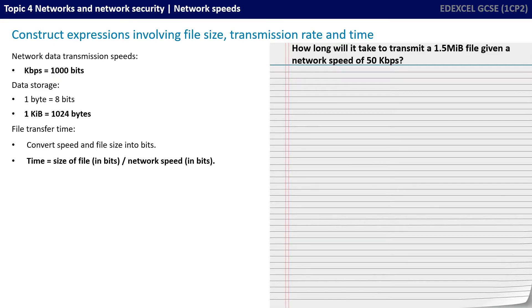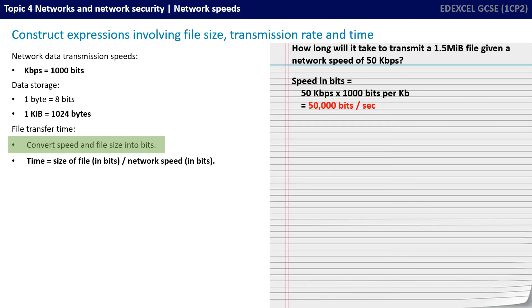Let's work through an example. How long will it take to transmit a 1.5 megabit file given a network speed of 50 kilobits per second? First, convert the speed into bits: 50 kilobits per second times 1,000 bits per kilobit gives us 50,000 bits per second.